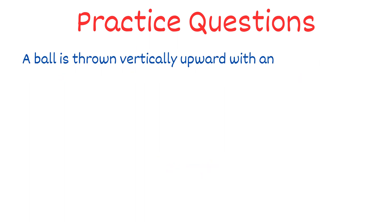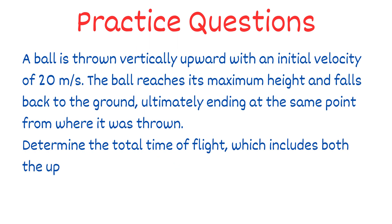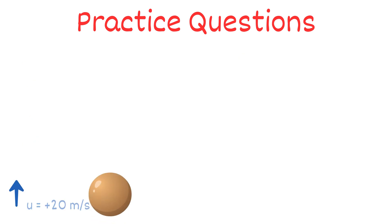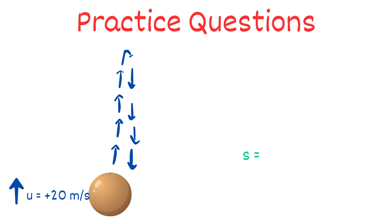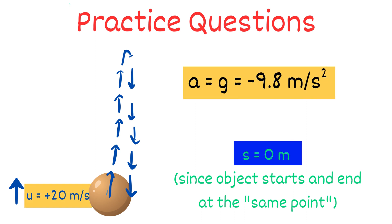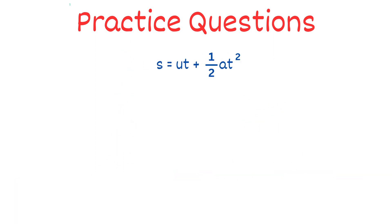Now let's look at a more difficult example. A ball is thrown vertically upward with an initial velocity of 20 meters per second. The ball reaches its maximum height and falls back to the same point from where it was thrown. So U equals plus 20 m/s, and displacement S equals 0. Since it is free fall under gravity, acceleration A equals negative 9.8 m/s². We have U, S, and A, and need to find T — so we use S equals UT plus half times A times T squared.